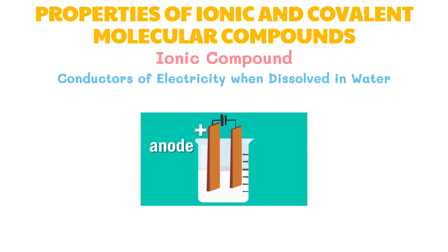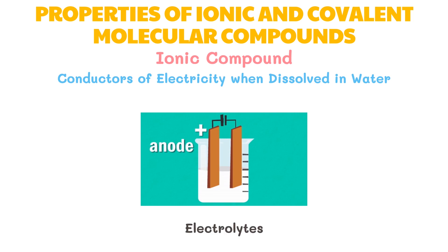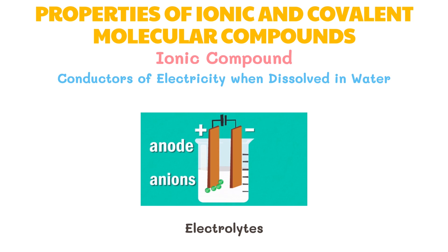When ionic compounds are dissolved in water to form an aqueous solution, the cations and anions are dissociated and are free to conduct electricity through the solution. These ionic substances that conduct electricity are referred to as electrolytes. When an ionic compound like salt is dissolved in water, the ions break out individually into cations and anions that are free to move. When electrodes are dipped into the salt solution, the cations flow to the negative electrode while the anions flow to the positive electrode, causing electricity to flow.